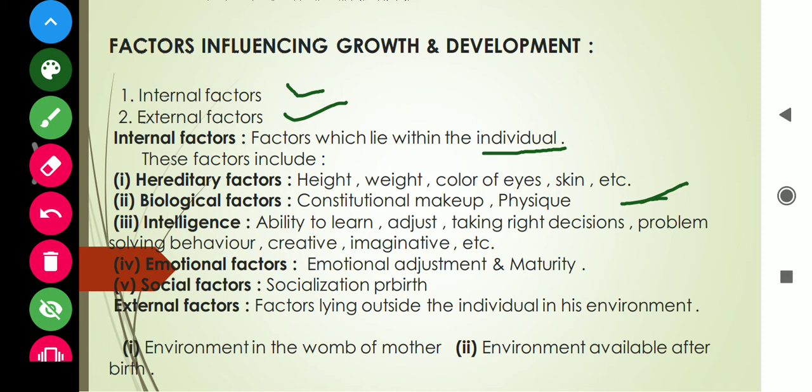The second point is biological factors, which includes constitutional makeup and physique or body types. The third factor is intelligence, which includes the ability to learn, adjust, take right decisions, problem-solving behavior, creativity, and imagination.